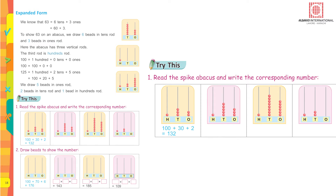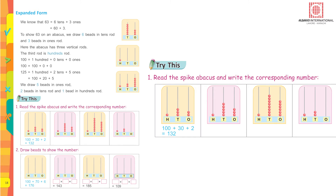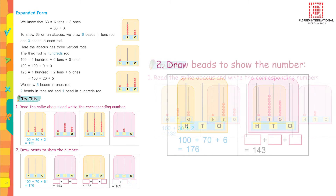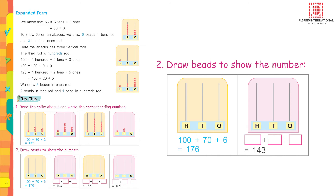Read the spike abacus and write the corresponding number. There is one bead in the hundreds rod, three beads in the tens rod, and two beads in the ones rod. This equals 132. Now do the rest yourselves.